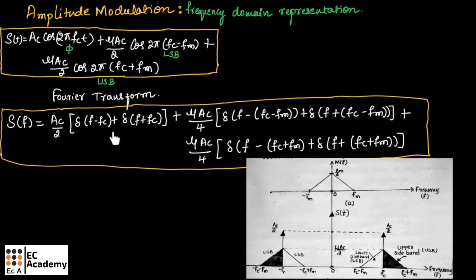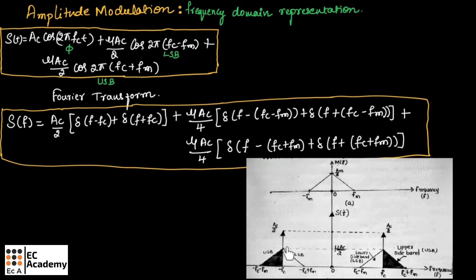In this equation, the first term is a delta function at F equal to Fc and F equal to minus Fc, with amplitude AC/2. Then, centered around Fc, we have the message signal components at Fc plus Fm and Fc minus Fm, and around minus Fc at minus Fc plus Fm and minus Fc minus Fm. The shaded part represents the upper sideband frequency and the other part is the lower sideband frequency. The amplitude of this signal is mu AC divided by 2.